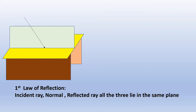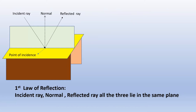If a light ray is incident on a surface, the point at which the light ray is incident, we call it point of incidence. The incident ray will get reflected — we call this the reflected light ray. An imaginary line perpendicular to the surface at the point of incidence is called the normal. The first law says the incident ray, normal, and reflected ray — all three lie in the same plane.